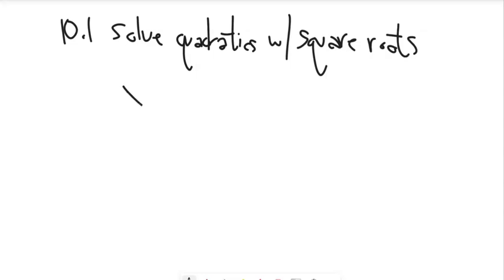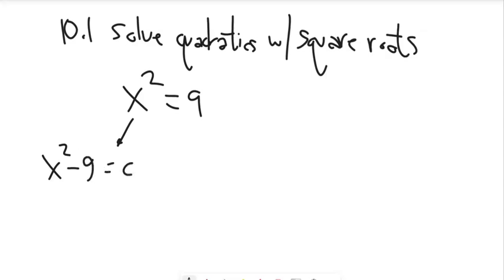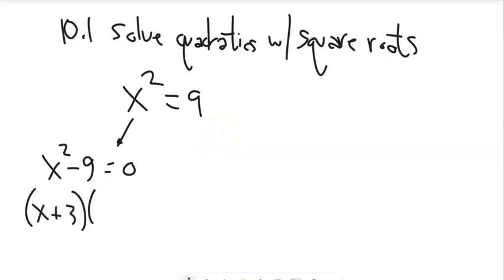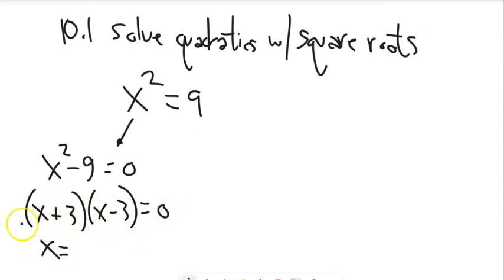If I think about x squared equals 9, there are two ways I could go about solving this. One is to get it equal to 0 and subtract 9 from both sides. We know this is the difference of two squares, so we could factor this to x plus 3 times x minus 3. These two things multiplied give me 0, so x equals negative 3 or 3.